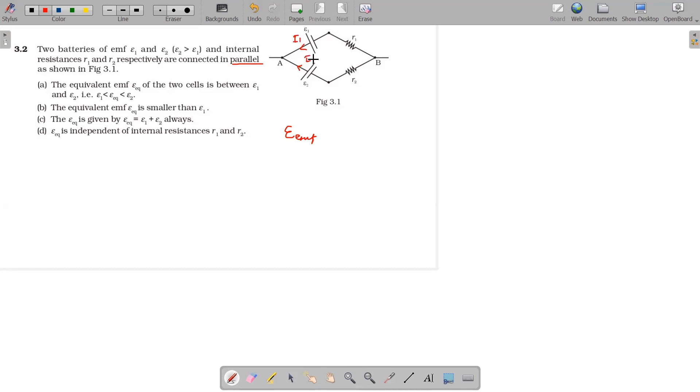This one is i2. The total current is i, which is equal to i1 plus i2. i1 is nothing but e1 by r1 plus e2 by r2.